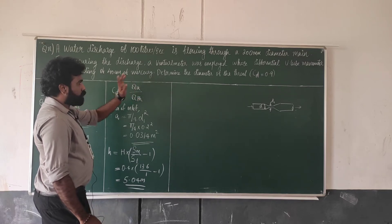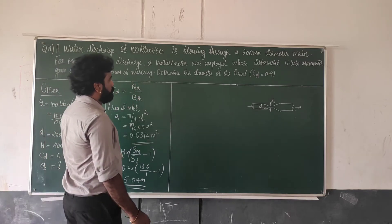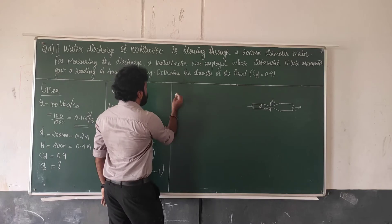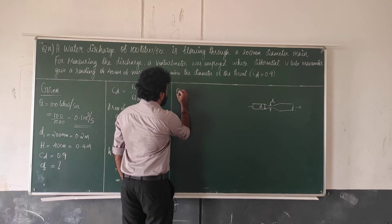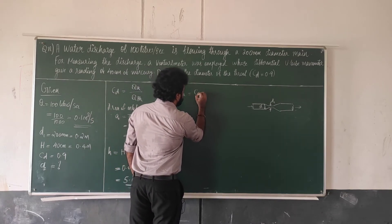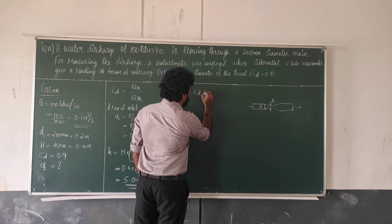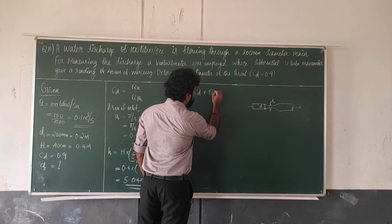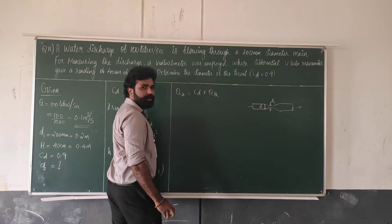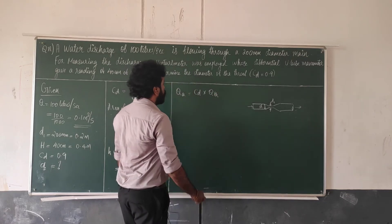Now for the diameter of the throat calculation, Q actual is equal to CD into Q theoretical.